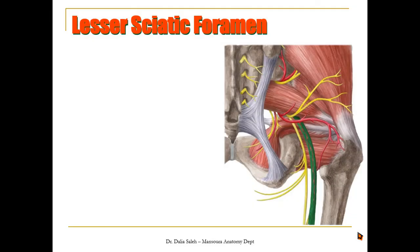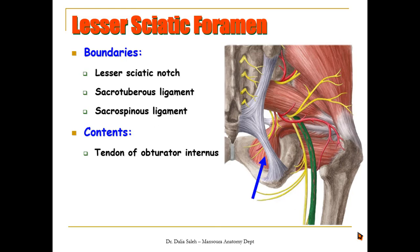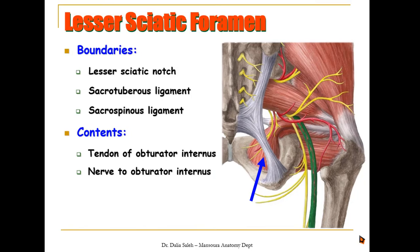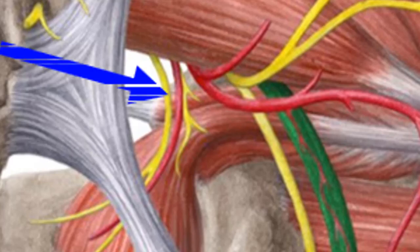The lesser sciatic foramen is bounded by the lesser sciatic notch and the sacrotuberous and sacrospinous ligaments. It contains the obturator internus tendon, along with the structures that pass from the greater to the lesser sciatic foramen: the nerve to obturator internus, the pudendal nerve, and the pudendal vessels.